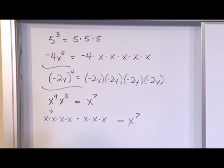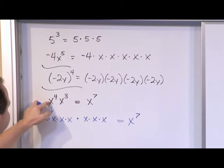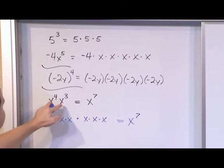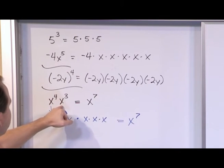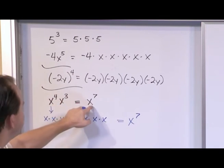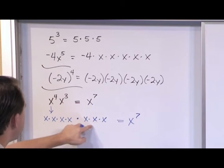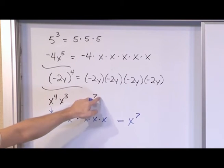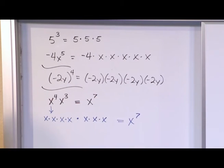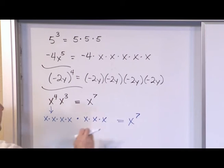In order to add exponents, the base — which is the x in this case — has to be the same. So x matches with x. We keep the base the same, which is everything we're multiplying together, and we add the exponents together. Because ultimately, this is what's happening.